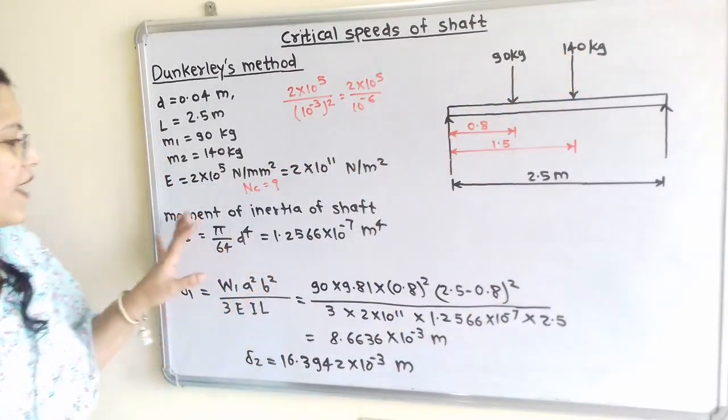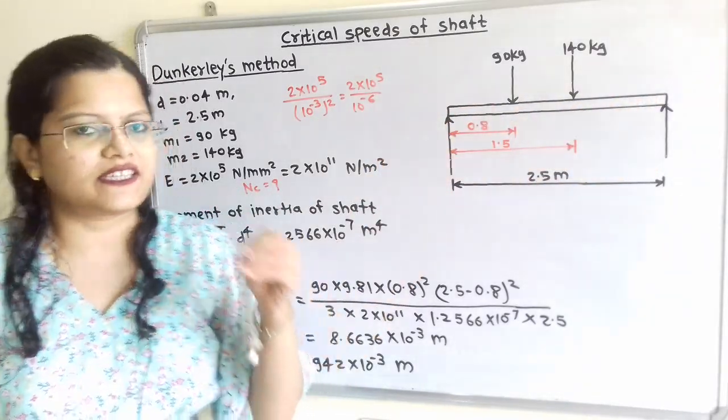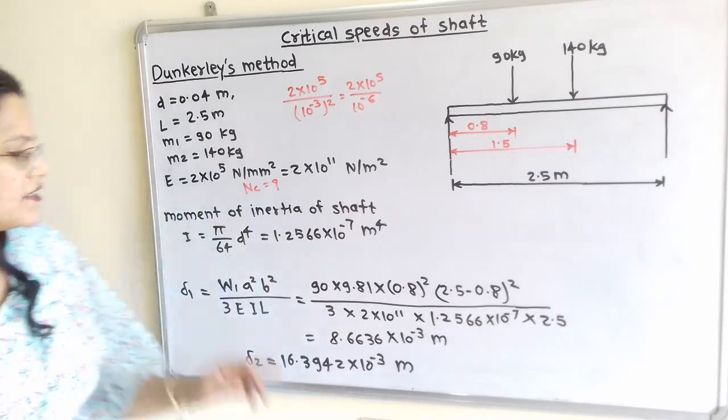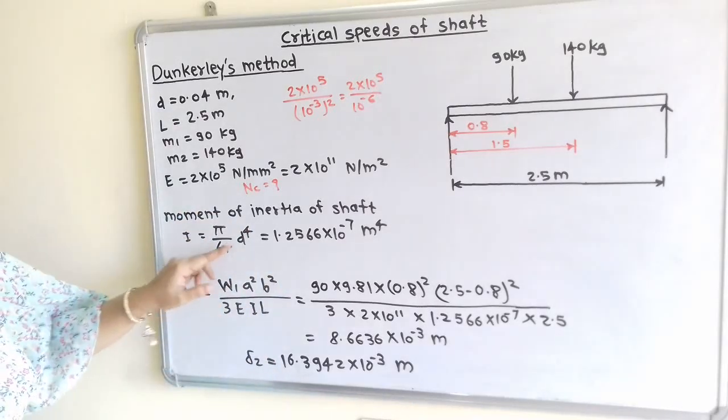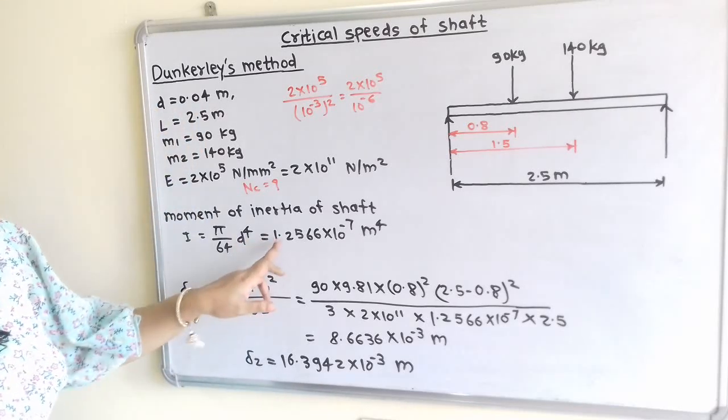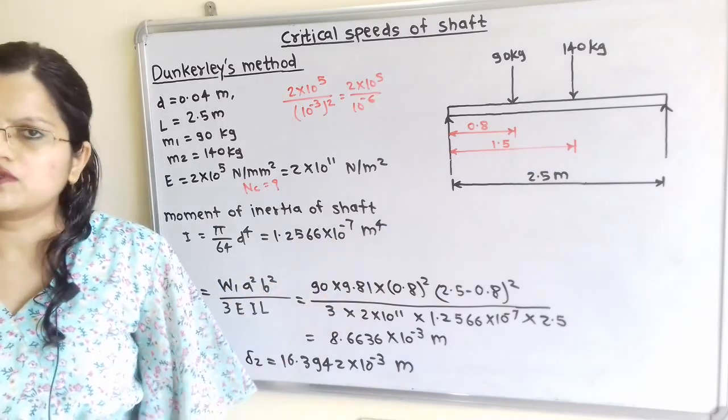So we will first find out the moment of inertia of the shaft. So how to calculate inertia? That means resistance to the deflection. So inertia I is equal to pi by 64 D raise to 4 where D is the diameter. So when we put the value then 1.2566 into 10 raise to minus 7 meter raise to 4.